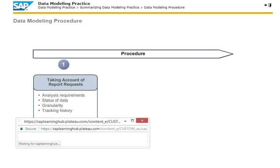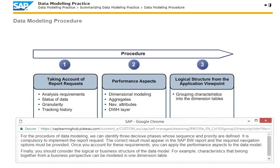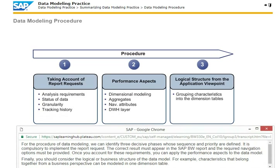For the procedure of data modeling, we can identify three decisive phases whose sequence and priority are defined. It is compulsory to implement the report request. The correct result must appear in the SAP BW report and the required navigation options must be provided. Once you account for these requirements, you can apply the performance aspects to the data model. Finally, you should consider the logical or business structure of the data model. For example, characteristics that belong together from a business perspective can be modeled in a one-dimension table.